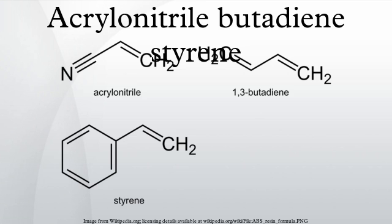Production: ABS is derived from acrylonitrile, butadiene, and styrene. Acrylonitrile is a synthetic monomer produced from propylene and ammonia. Butadiene is a petroleum hydrocarbon obtained from the C4 fraction of steam cracking. Styrene monomer is made by dehydrogenation of ethylbenzene, a hydrocarbon obtained in the reaction of ethylene and benzene.